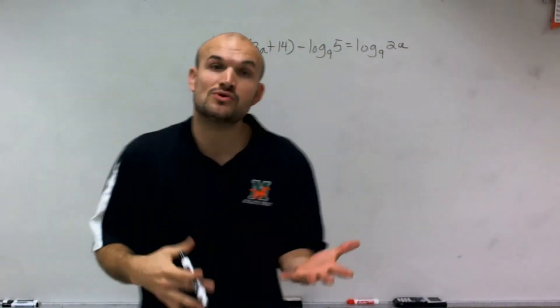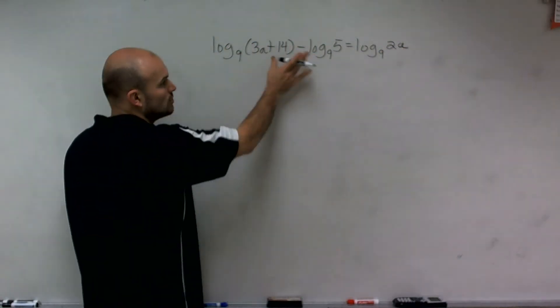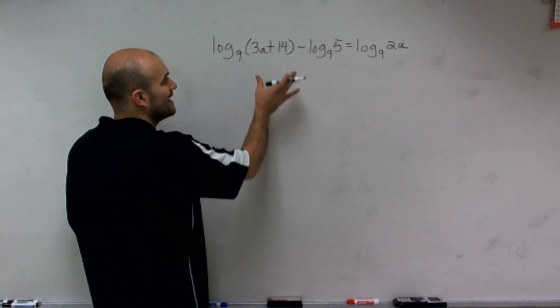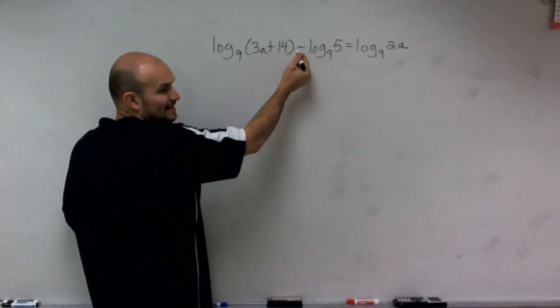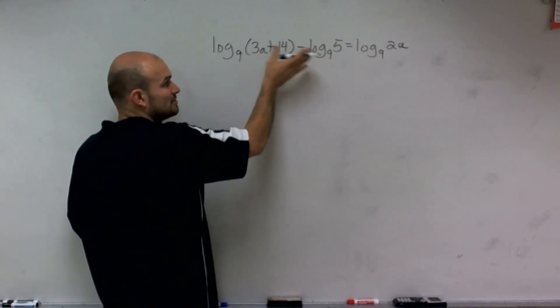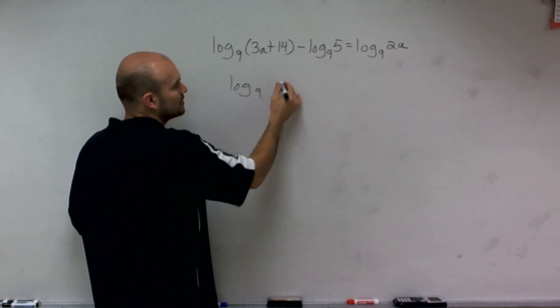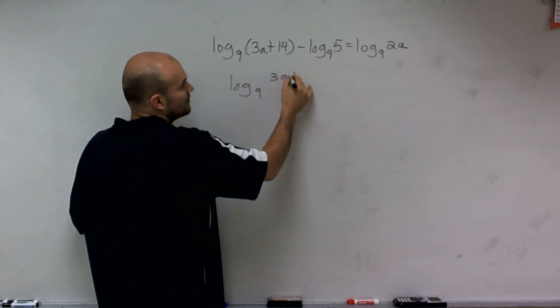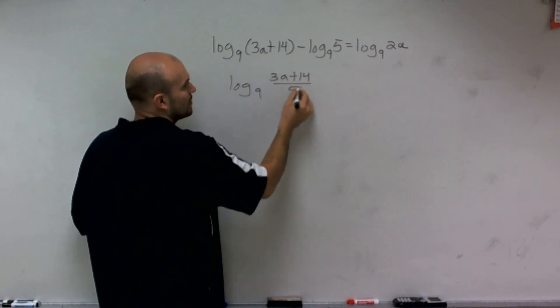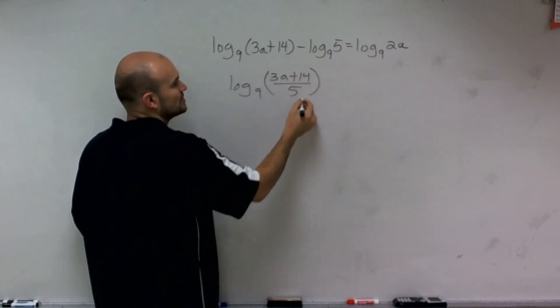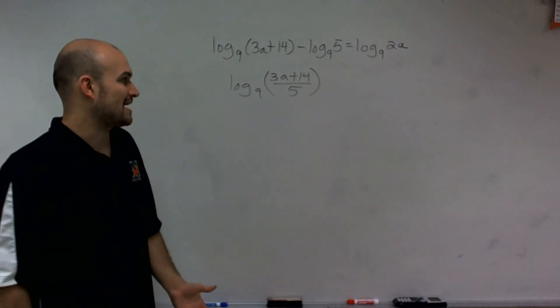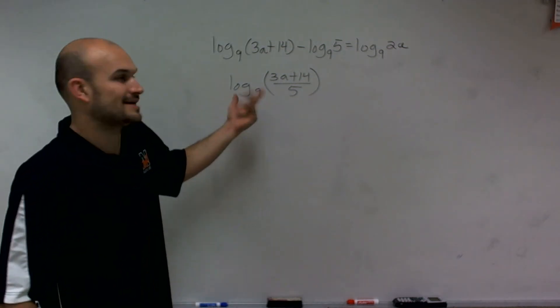And to do that, we're going to want to use the quotient property of logarithms. So the quotient property of logarithms states, if I have two logarithms and I'm subtracting them, if I have the difference of two logarithms, as long as they have the same base, I can now rewrite them as the quotient of what we're evaluating the two logarithms for. So I can rewrite this as the quotient of 3a plus 14 divided by 5. And notice the base remains the same.